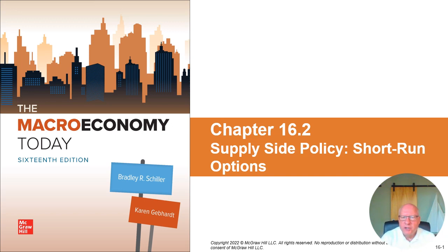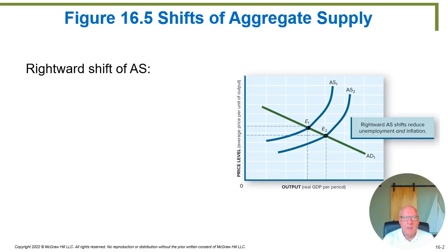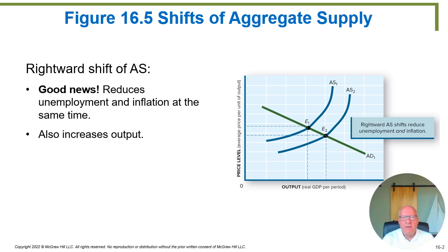In our 16.2 subsection, we're going to pick up again with our supply-side policies and take a look at some of the options. The first thing to recognize is we want to have a rightward shift of the aggregate supply curve. On our graph, we're at aggregate supply curve 1 and at equilibrium on the aggregate demand curve at E1. If we can make a rightward shift to aggregate supply curve 2, we actually have two good things happen at the same time — output increases from E1 to E2, and prices come down.